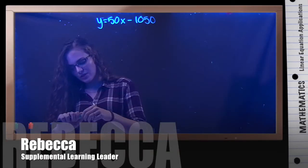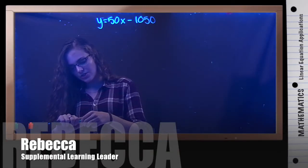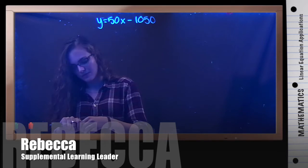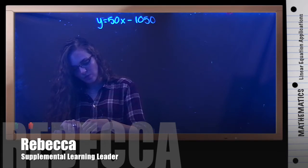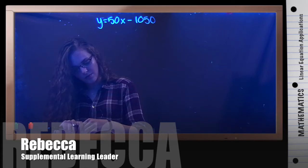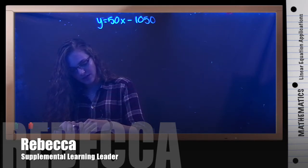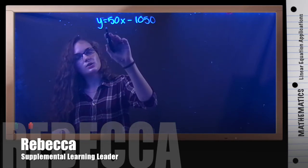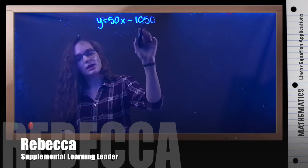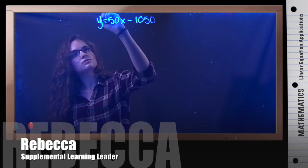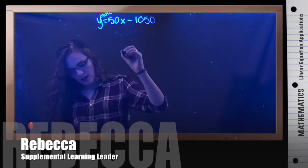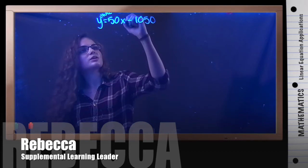For this example, we're going to be doing an applications of linear equations problem. The example says: Dan owes the dentist $1,050 for a very painful work. He will pay $50 a month until the debt is paid off. The equation to represent the situation is y equals 50x minus 1,050, where y is the amount owed and x is the number of months.